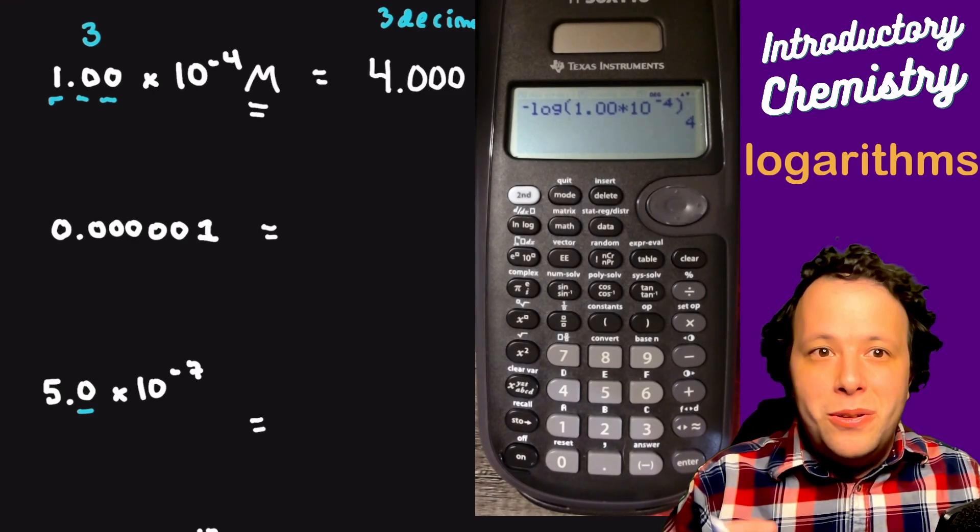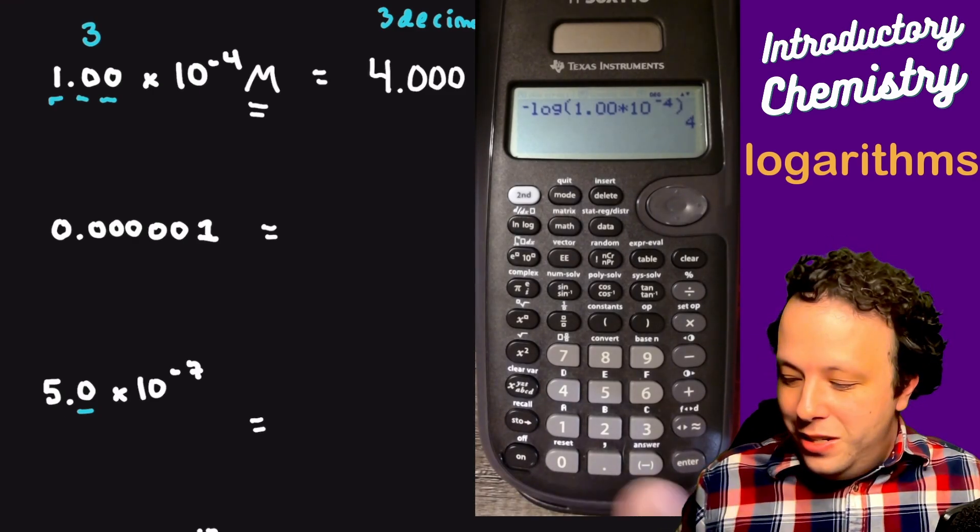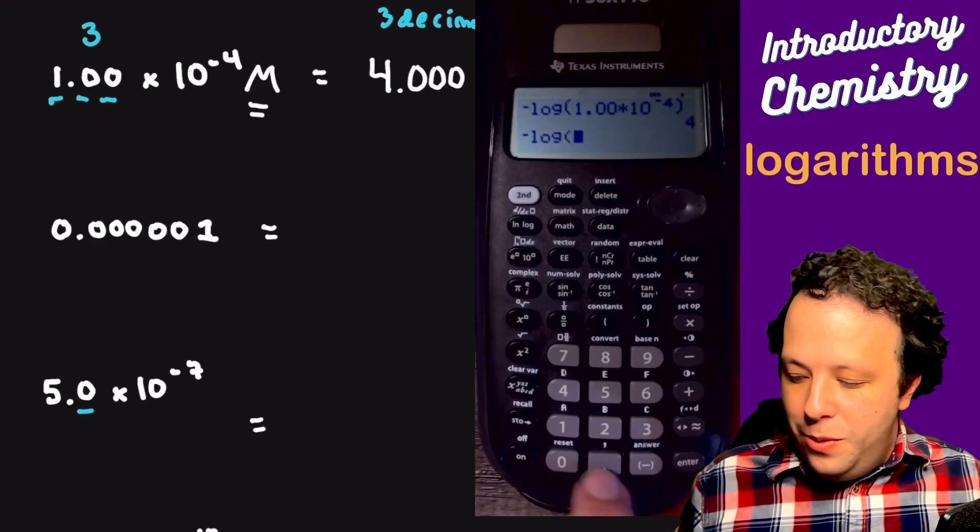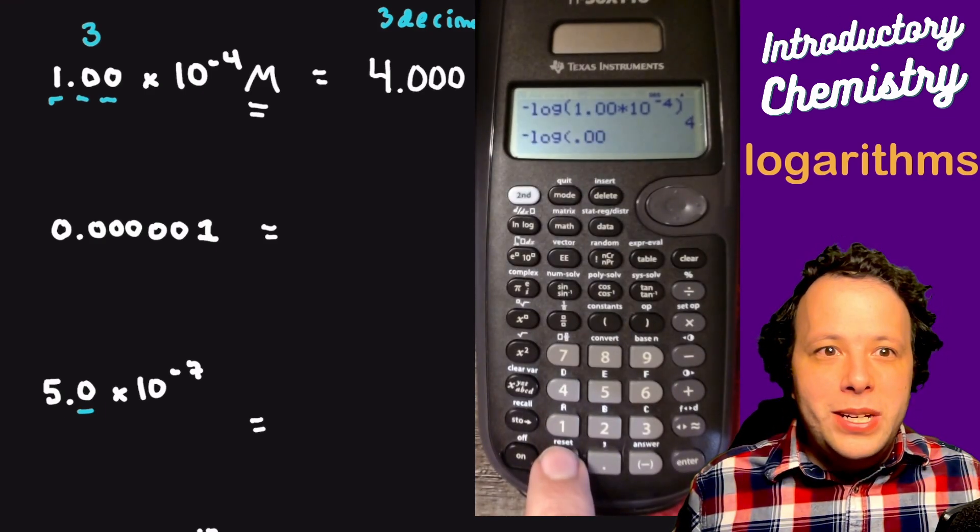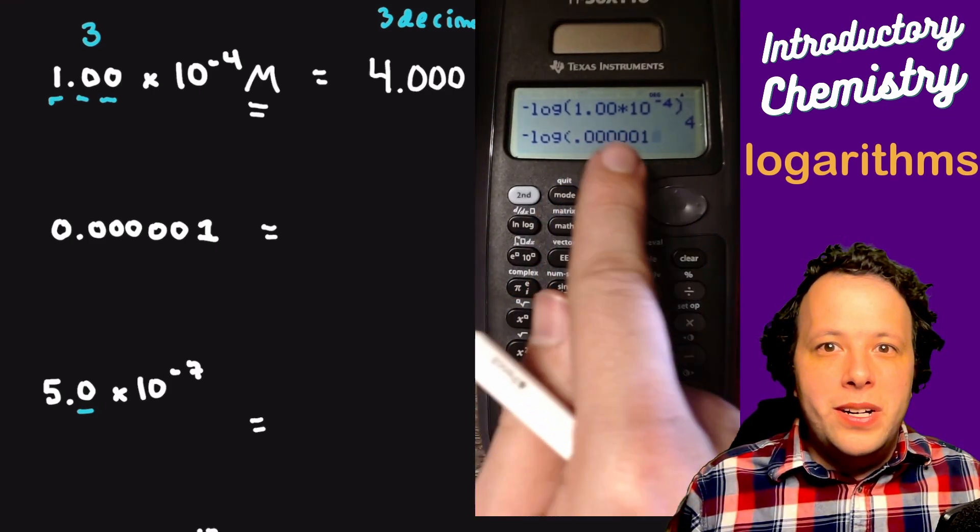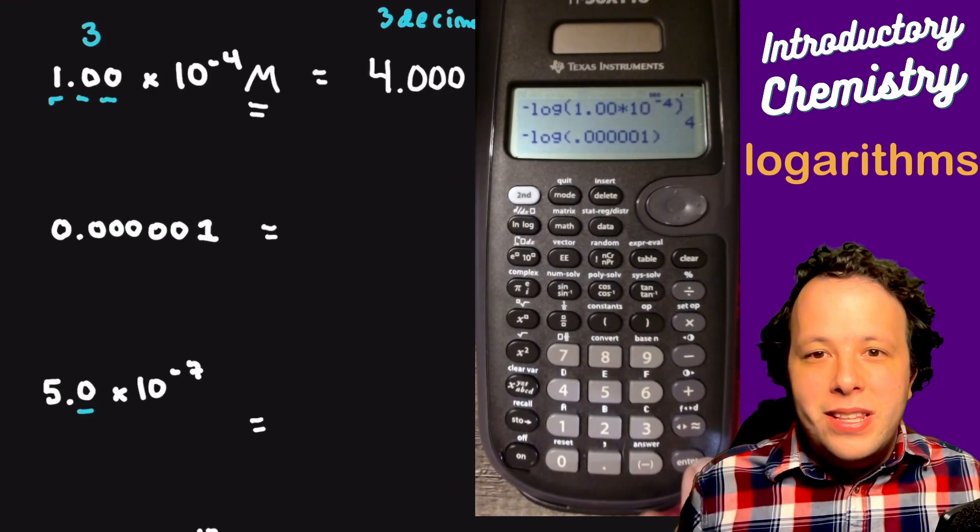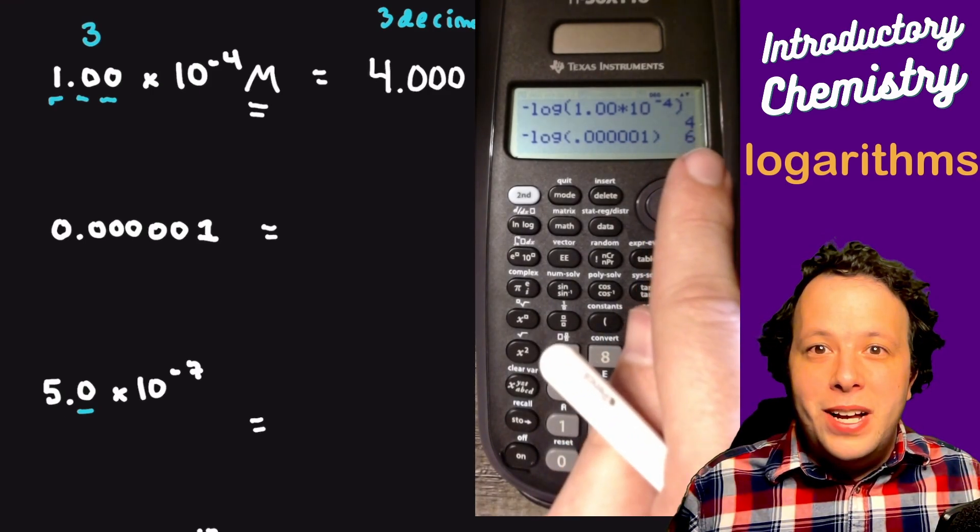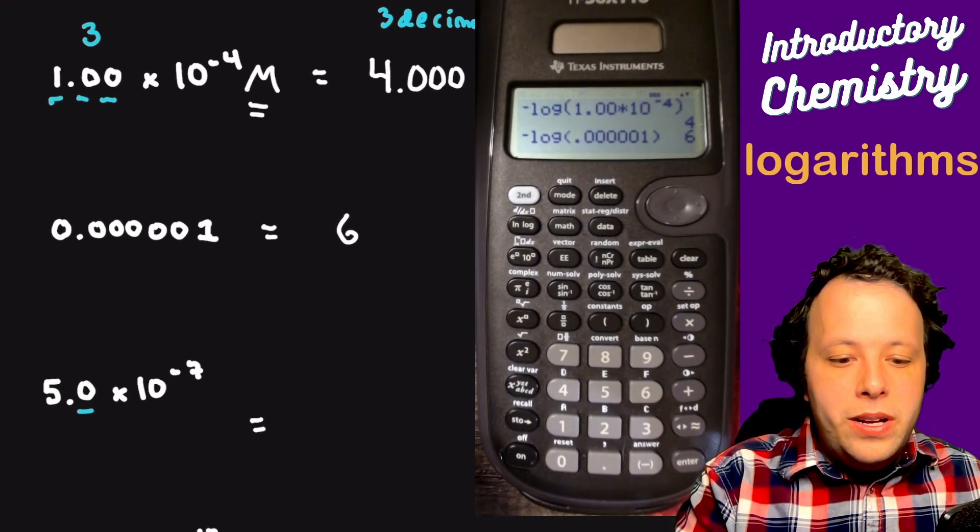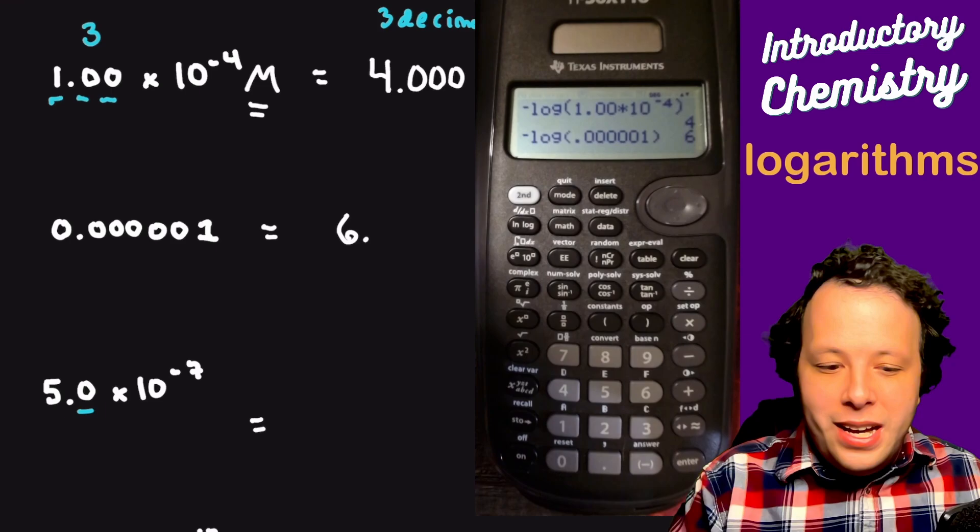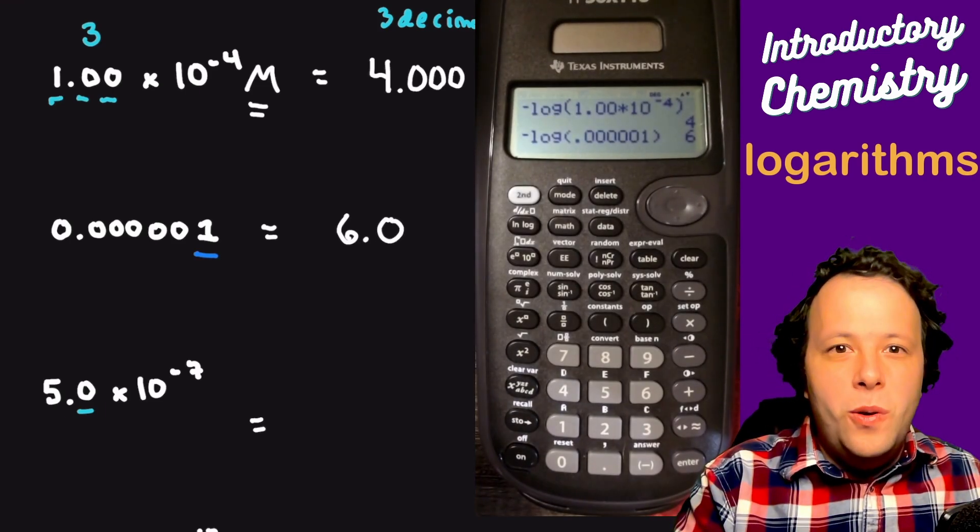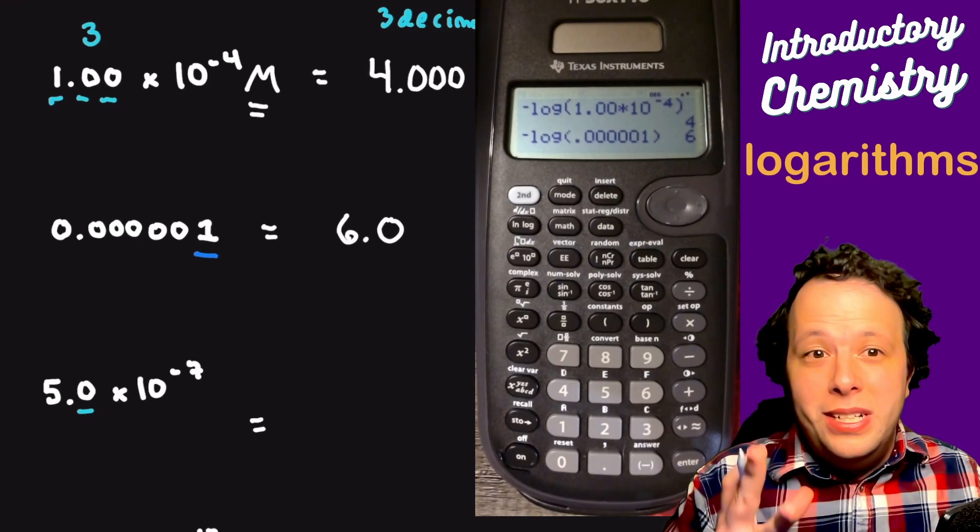So I have 0.00001. We're going to do the same idea. We still hit that negative log, make sure the log pops up. Now we will plug in our value. So we need 1, 2, 3, 4, 5 zeros, then 1. We want to just double-check that we have everything in parentheses, hit equals, and we'll have our value. This tells you that that decimal place moved over six times, which is what our pH is. Being that we had a total of one sig fig, that means we're going to have one decimal place with our number, so 6.0.